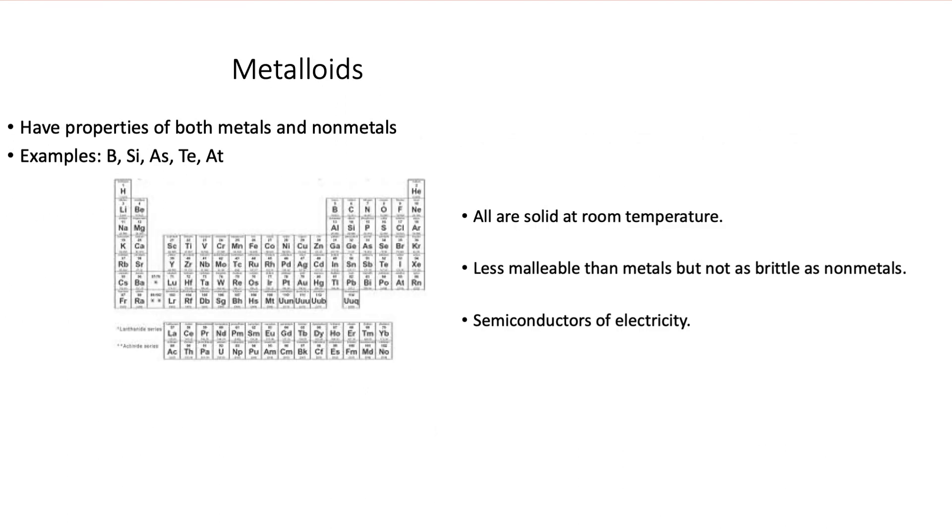And the third group is metalloids. Metalloids have both properties of metals and nonmetals. Some examples, we see here we have boron, silicon, arsenic, tellurium. Talked about the stair step.